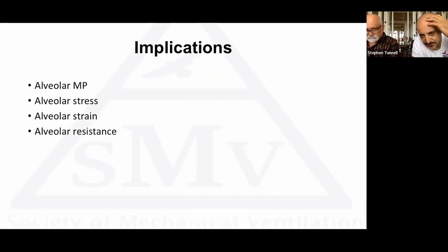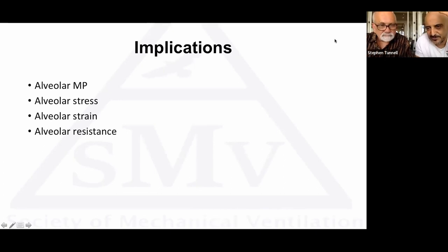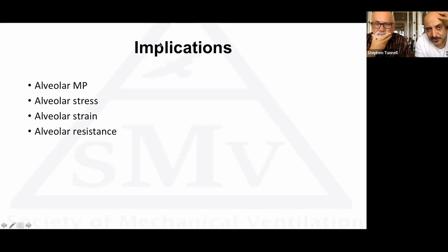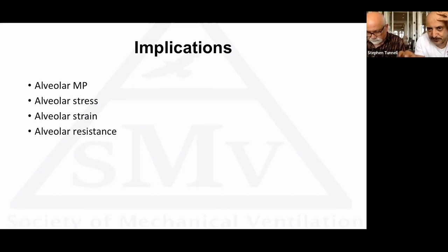The implication: if we really believe in the concepts of strain, stress, and mechanical power, we should target the areas most likely injured — the alveoli. Using these equations we can calculate alveolar mechanical power, alveolar stress, alveolar strain, and alveolar resistance, while recognizing that the lung is not homogeneous and each alveolus has its own compliance, resistance, and susceptibility to different stress and strain.